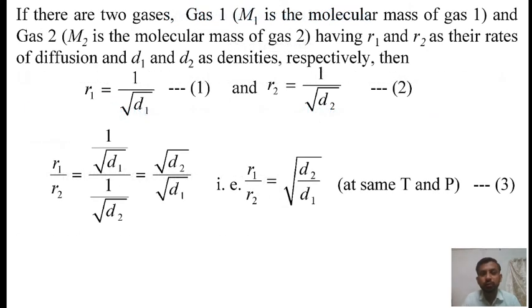Now consider two gases: gas 1 with the molecular mass M1 and gas 2 with the molecular mass M2, having R1 and R2 as their rates of diffusion and D1 and D2 as densities.